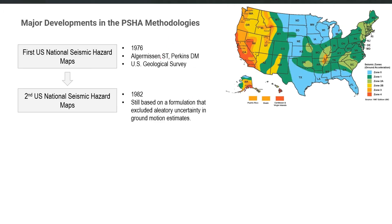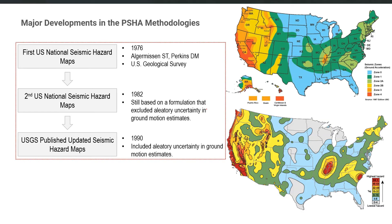The first U.S. national seismic hazard maps were developed in 1976 by Professor Algermissen, and they were updated in 1982. However, those updated maps were still based on a formulation that excluded aleatory uncertainty in ground motion estimates. In the 1990 version of the U.S. national seismic hazard maps developed by USGS, aleatory uncertainty was explicitly considered.